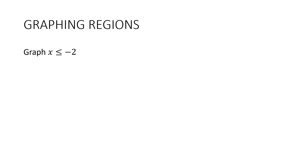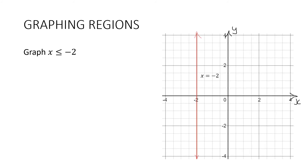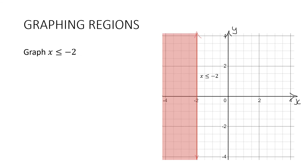How about this one? Graph x is less than or equal to negative 2. We're going to start by graphing x equals negative 2, which is a vertical line going through x equals negative 2 all the way up and all the way down. We want less than or equal to negative 2, so we shade in this region. And this time we haven't changed the line to a dotted line because we've got an equals sign.